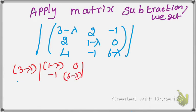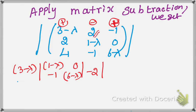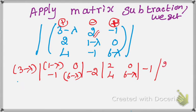Next, minus sign for second element 2: delete its row and column, remaining submatrix is [2, 0; 4, (6-λ)]. Then plus sign for third element -1: delete its row and column, remaining submatrix is [2, (1-λ); 4, -1]. Set the determinant equal to 0.